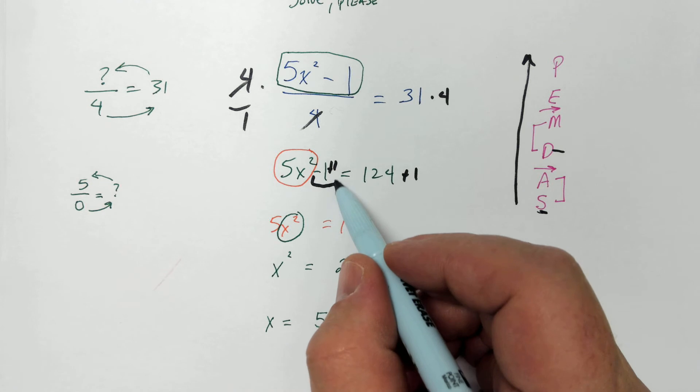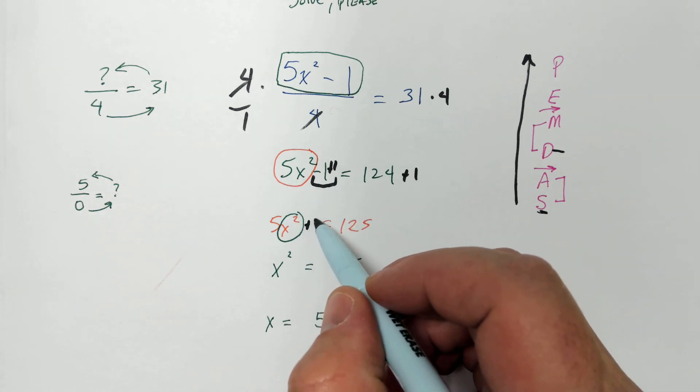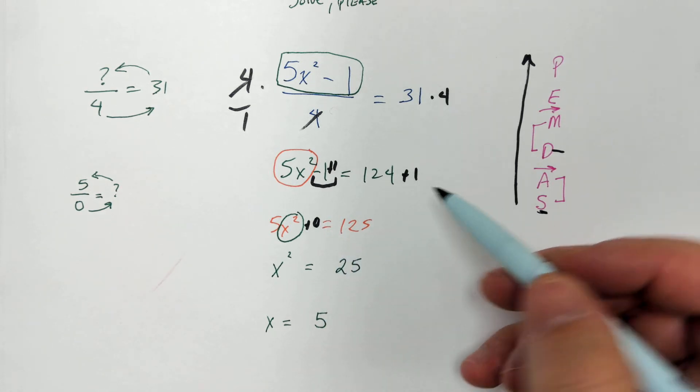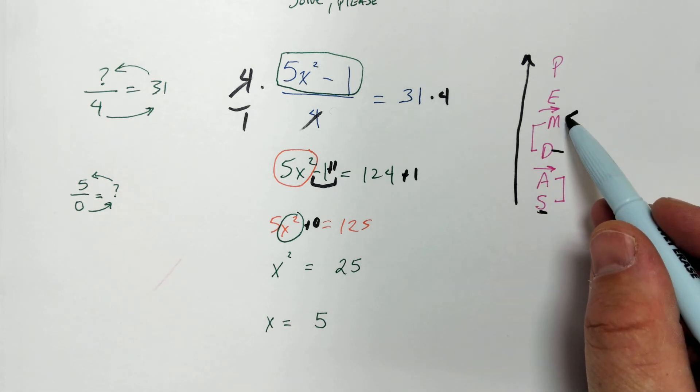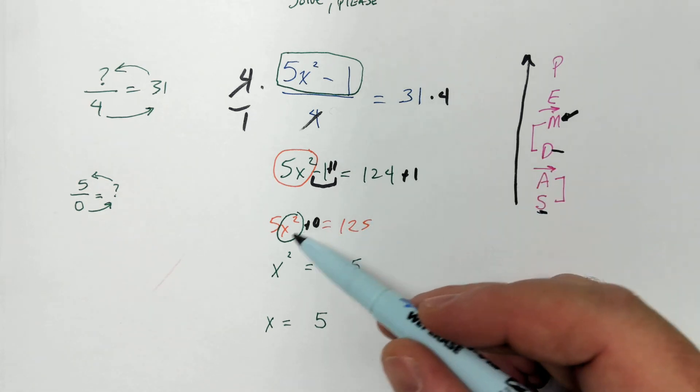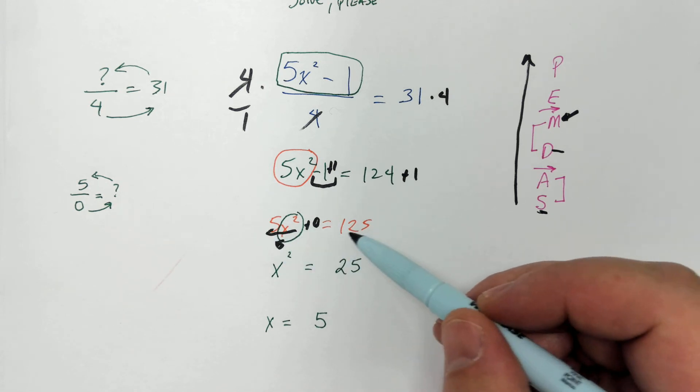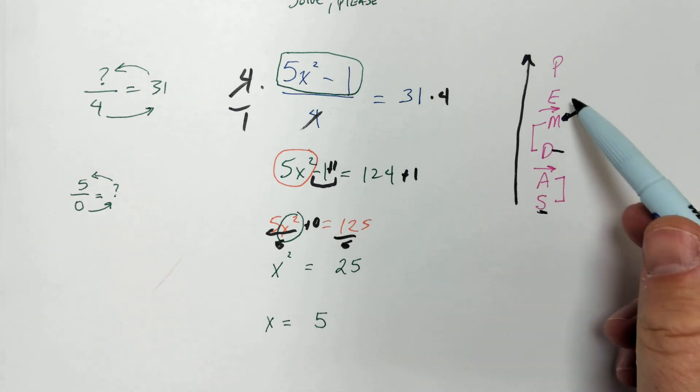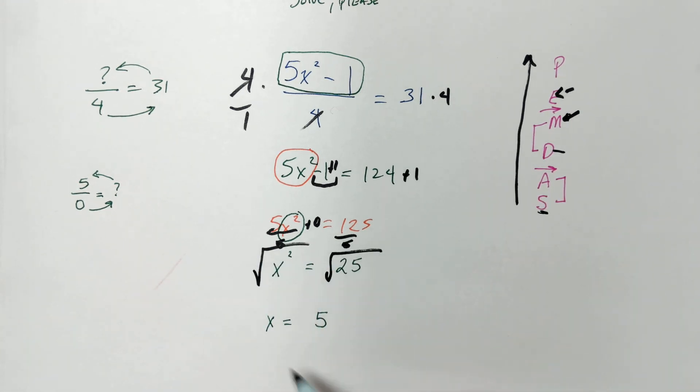Opposite of subtraction is addition. So, you would add 1 to both sides. That makes 0, right? So, 5x squared plus 0. You don't need to write plus 0, but I'm going to. But, you don't need to. You probably shouldn't. It's confusing. And then, 124 plus 1 is 125. Now, the next thing is we have multiplication of times 5, right? Opposite of multiply is divide. 125 divided by 5 is 25, right? Next thing we got is exponents. So, opposite of square is square root. x equals 5.